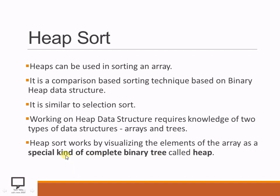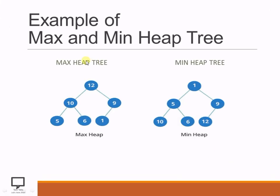But why the special kind? The speciality of that heap is that it is either a max heap tree or a min heap tree. In the max heap tree, the parent node is always greater than its children nodes, and in the min heap tree, the parent node is always minimum or lesser than its children nodes. If this special property is followed by a complete binary tree, then we can say it is a max heap tree or a min heap tree respectively, and these heap trees we are going to use to perform the sorting technique.